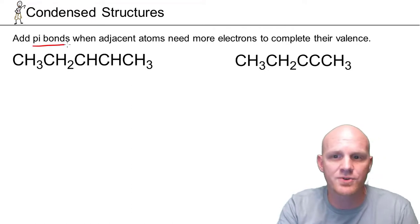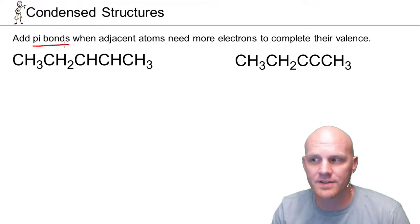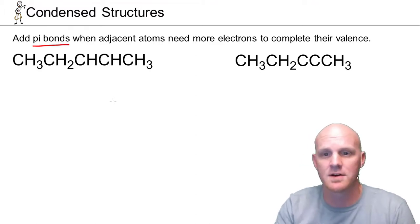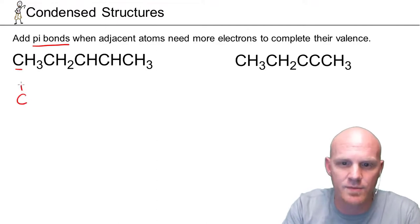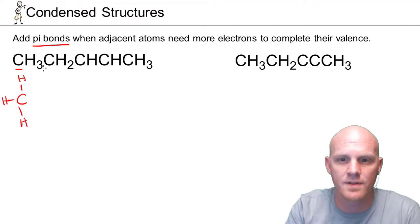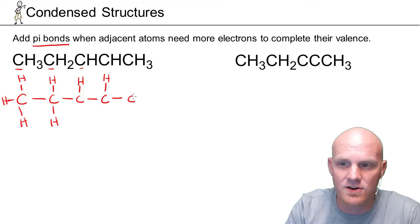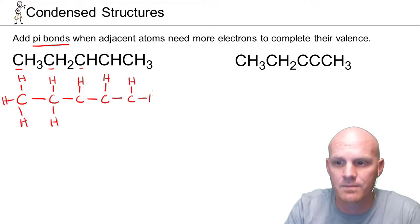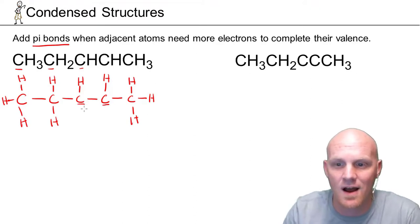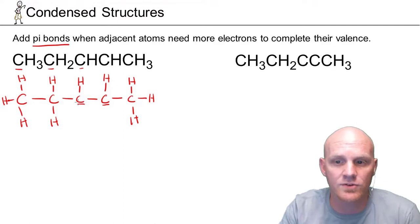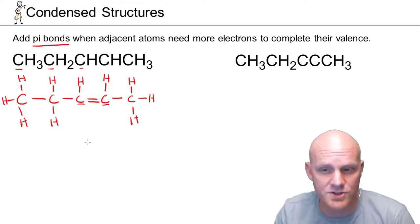The next thing to keep in mind when turning condensed structures into Lewis structures is when adjacent atoms need more electrons to complete their valence. If both of two atoms bonded to each other need more electrons, that's when you make multiple bonds — you add pi bonds, either a double or a triple bond. So we've got a carbon bonded to three H's, then the next carbon bonded to two H's, then the next bonded to one H, then the next also bonded to one H, then the last carbon bonded to three H's.